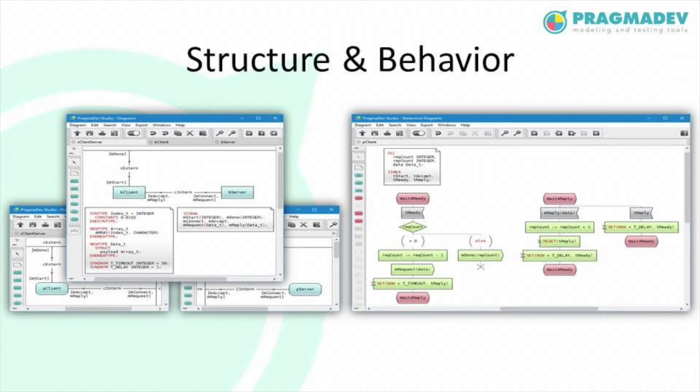In SDL we can describe the structure of the system by means of blocks and processes — a hierarchical representation where the leaves are the processes. The behavior of such processes can be described by means of finite state machines, with states, transitions, action blocks, sending and receiving signals, and so on. SDL also has a very formal semantics and an action language which allows us to describe the functional behavior in more detail.